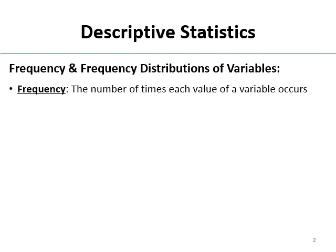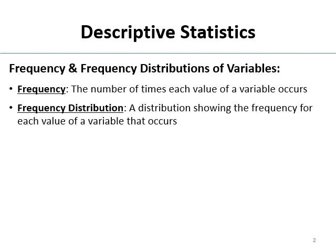So what is a frequency? It's the number of times that a value of a variable occurs. So if there's 25 redheads in a group, the frequency of redheads is 25. A frequency distribution is the distribution of the number of times that each value of a variable occurs — basically a distribution of frequencies for a variable.